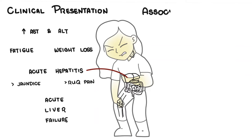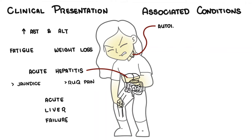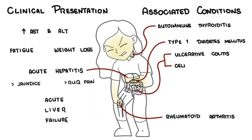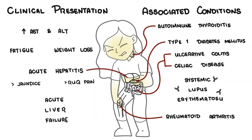Autoimmune hepatitis is associated with other autoimmune conditions, so many people may already have an underlying autoimmune condition. The most common association is autoimmune thyroiditis. Other associations include rheumatoid arthritis, type 1 diabetes mellitus, ulcerative colitis, celiac disease, and systemic lupus erythematosus.